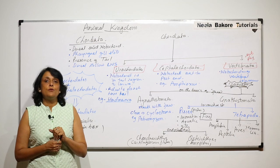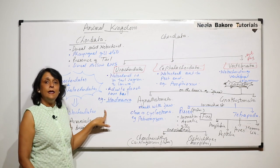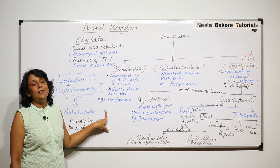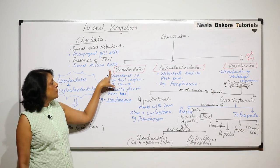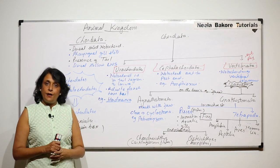Now one by one, we have to take all these categories and we will be talking about at least one example of each category. In the next video, we will start with Urochordata.